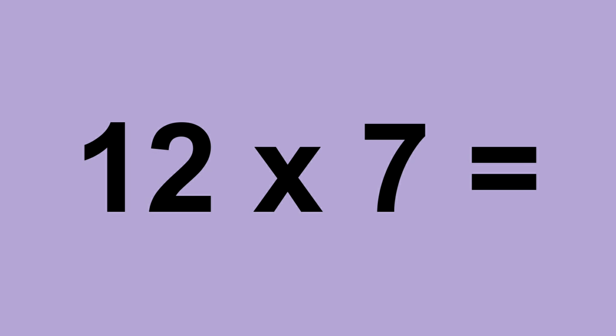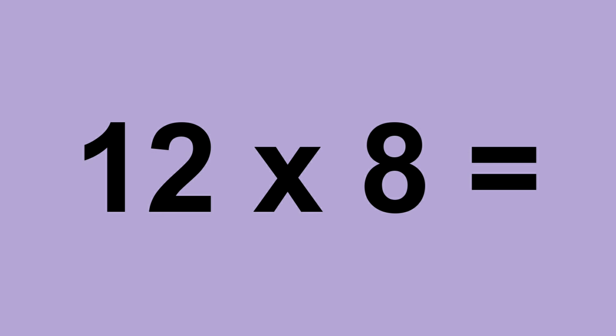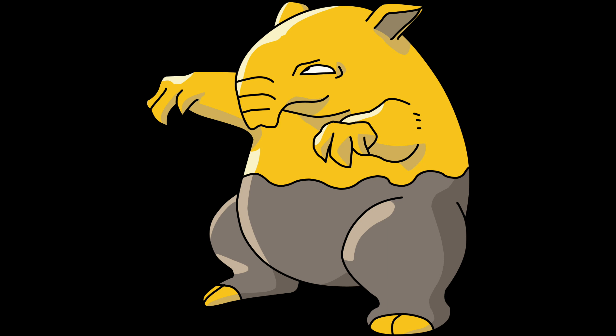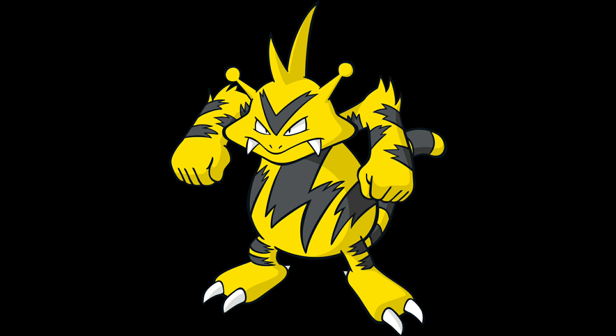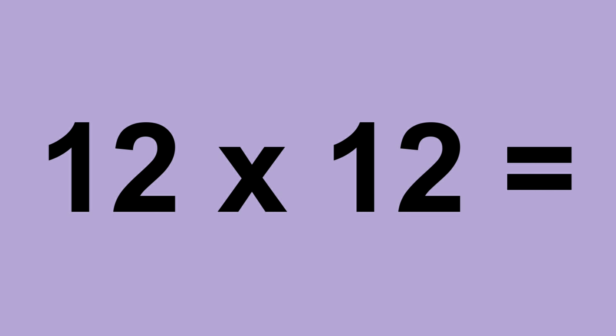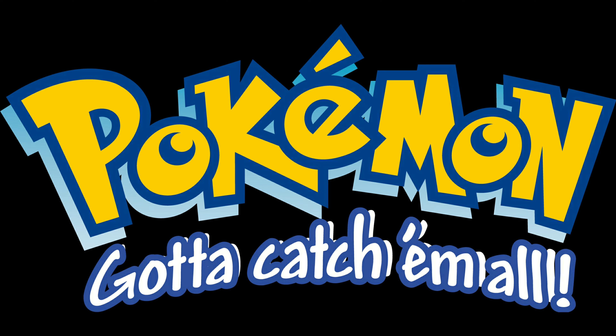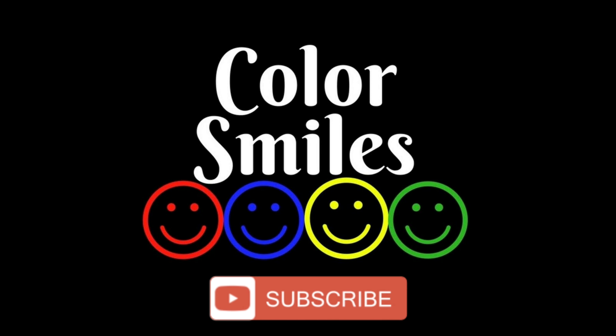Twelve times seven equals eighty-four. Twelve times eight equals ninety-six. Twelve times nine equals one hundred and eight. Twelve times ten equals one hundred and twenty. Twelve times eleven equals one hundred and thirty-two. Twelve times twelve equals one hundred and forty-four.